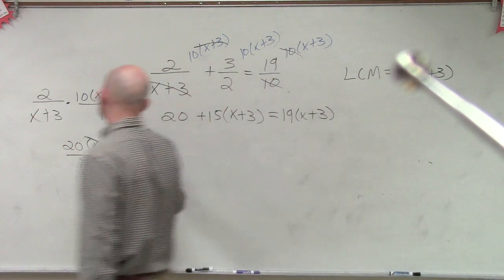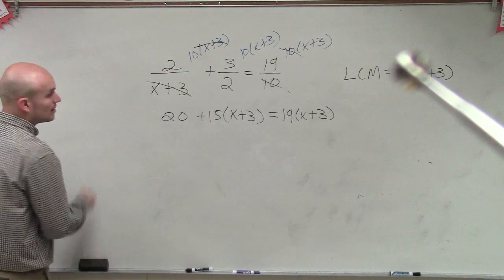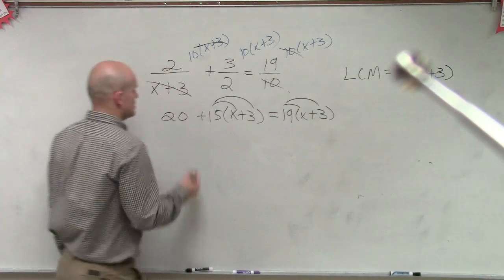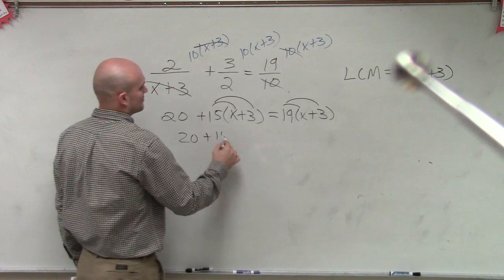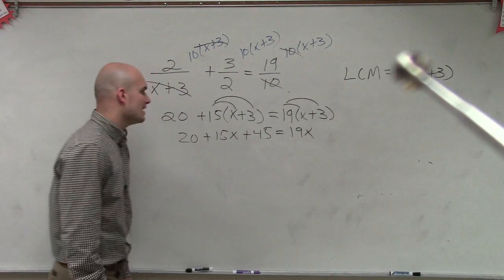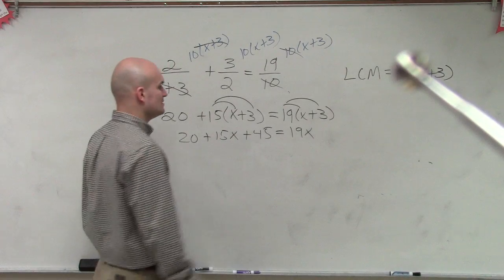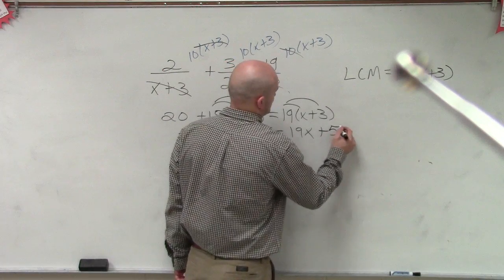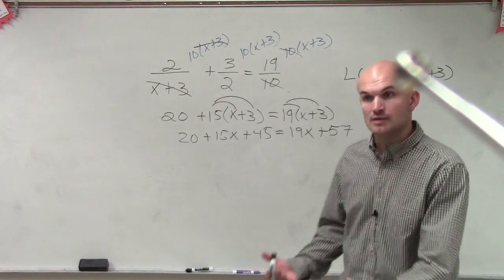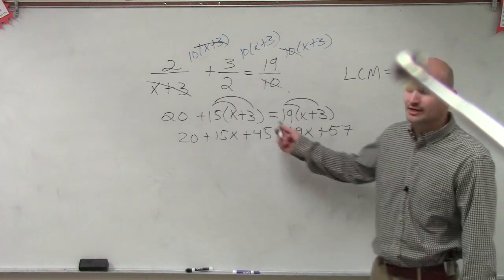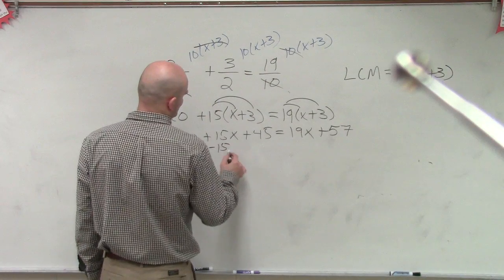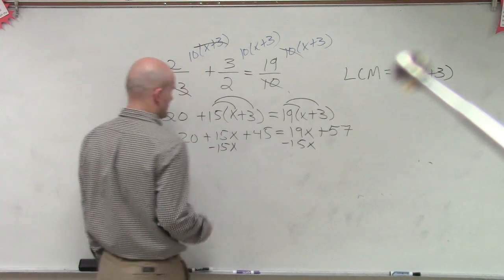All right. So now we need to apply distributive property. So now I distribute. So I get 20 plus 15x plus 45 equals 19x plus 57. OK? Now we have x's on both sides, right? So now we need to get the x's to the same side. Because this is a linear equation. So I always like to get the x's to the side where they'll be positive.